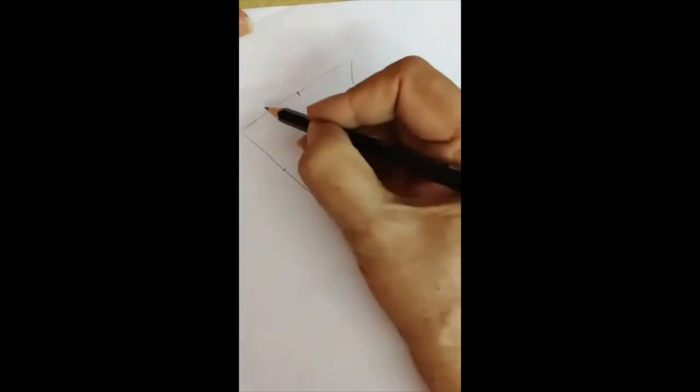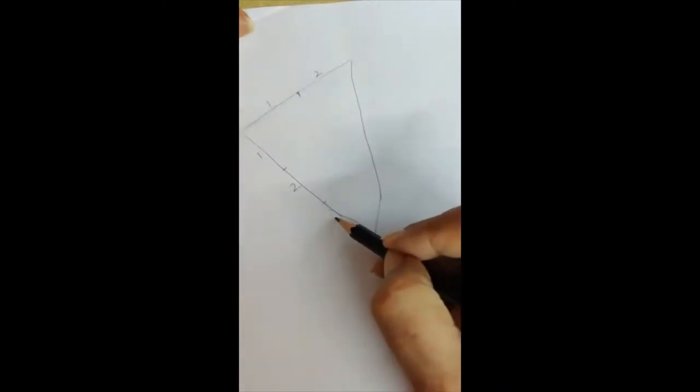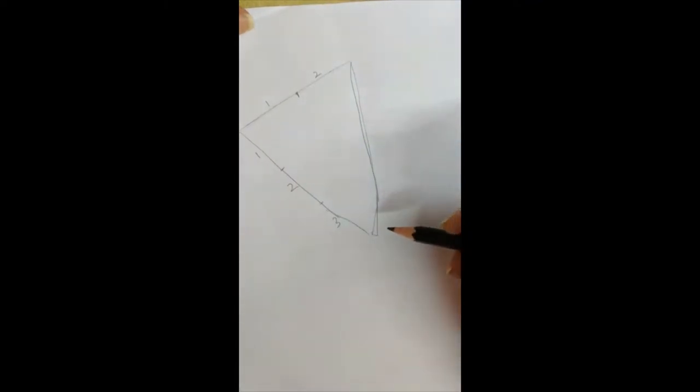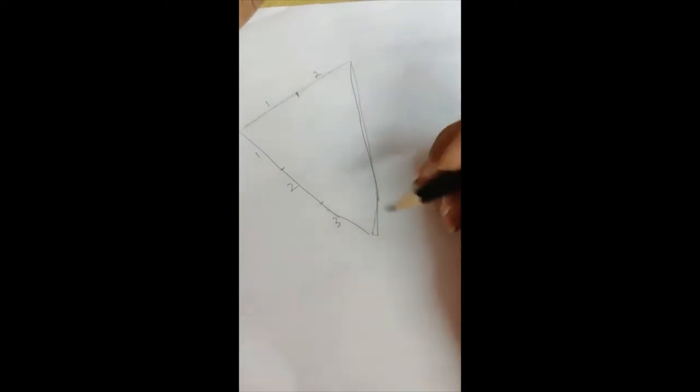So as you can see roughly by hand I have drawn, I have taken the ratio of 1 is to 3. This is an isosceles with equal sides. Anyway, don't worry about the straightness of the lines because you're going to rub them off.